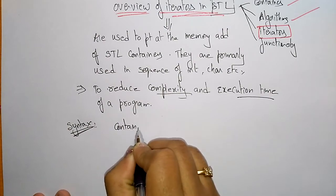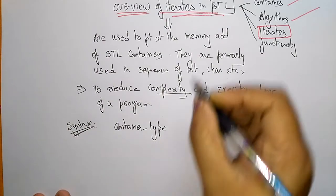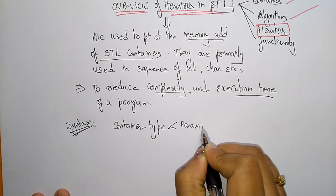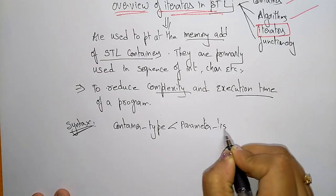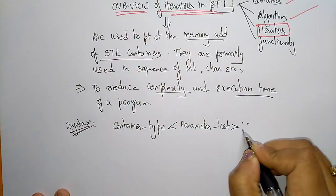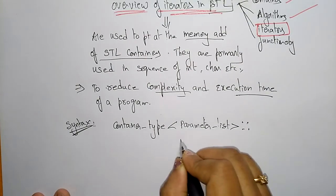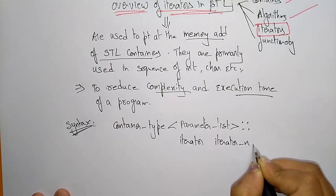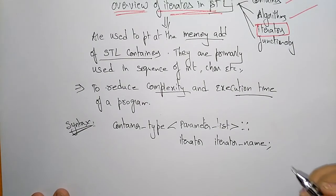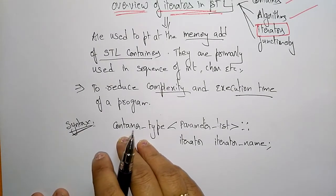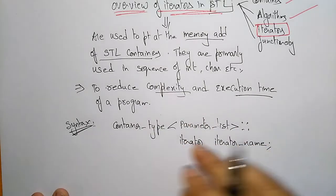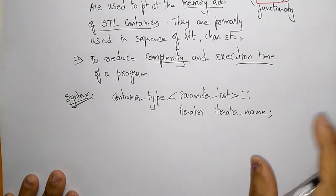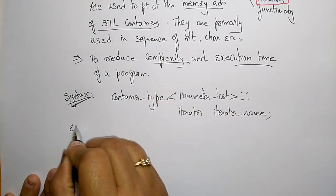Let us see the syntax of iterators. First you have to write the container type, because an iterator always points to the memory address of STL containers. Then the parameter list, scope resolution operator, iterator keyword, and the iterator name. That is the syntax of iterators.